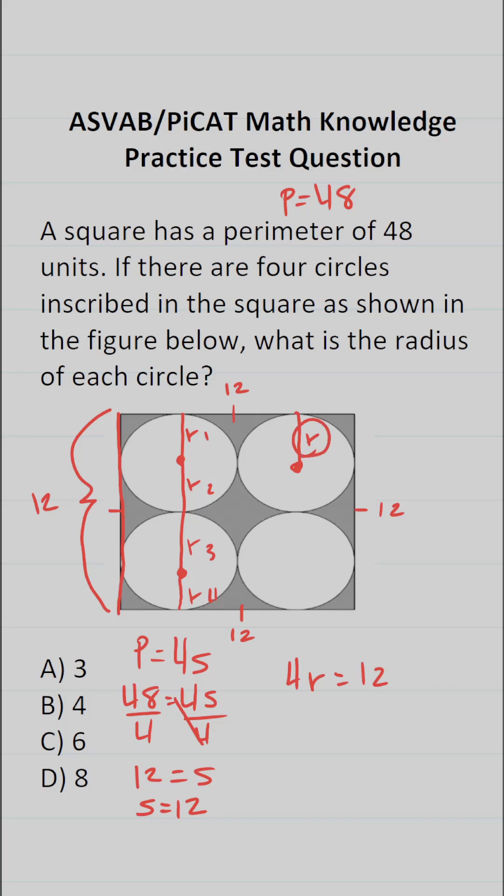Clearly, we just want to know what R is. So all we have to do is solve for R by dividing both sides of this equation by 4. This says R equals 12 divided by 4, which is 3. So we know the radius of each of these circles is going to be 3. So this one is going to be A.